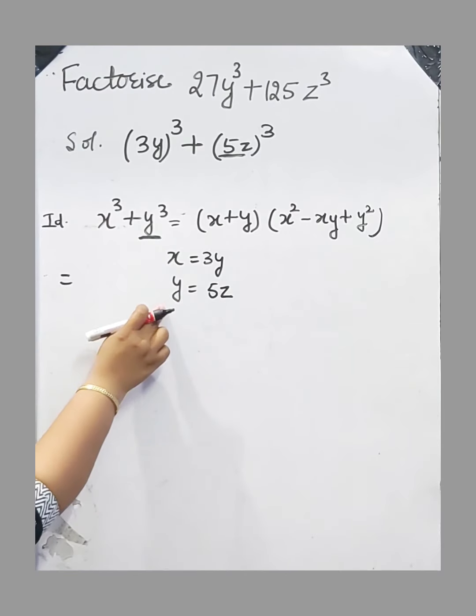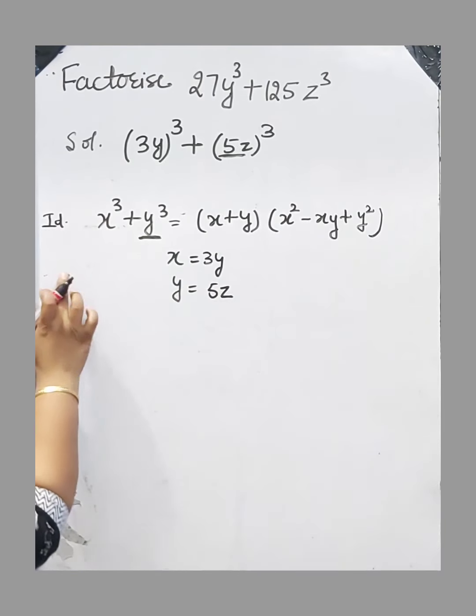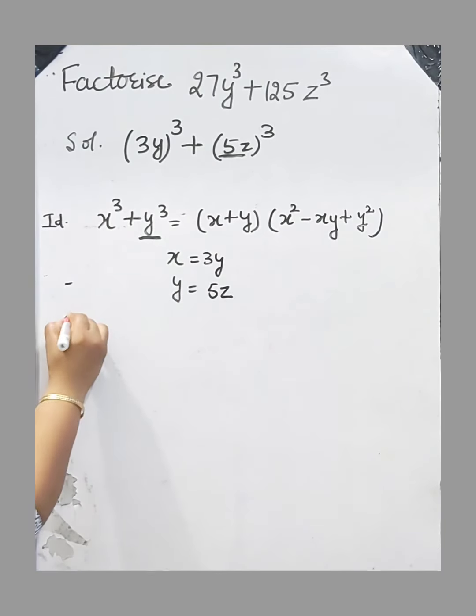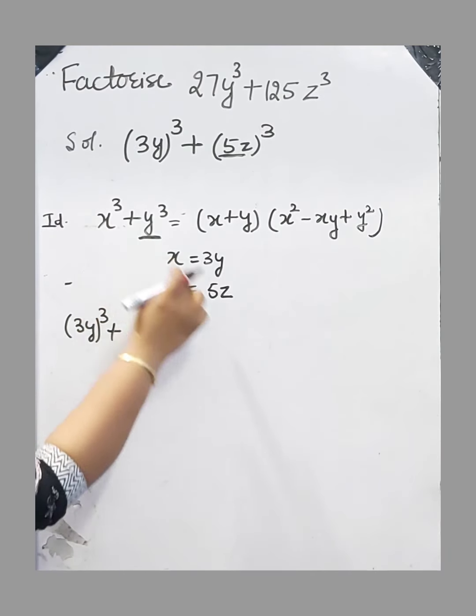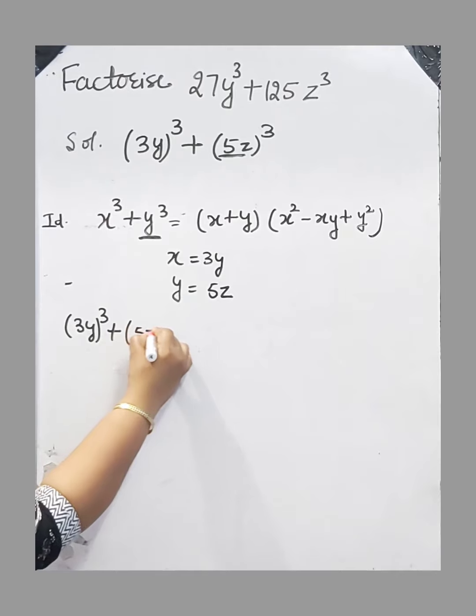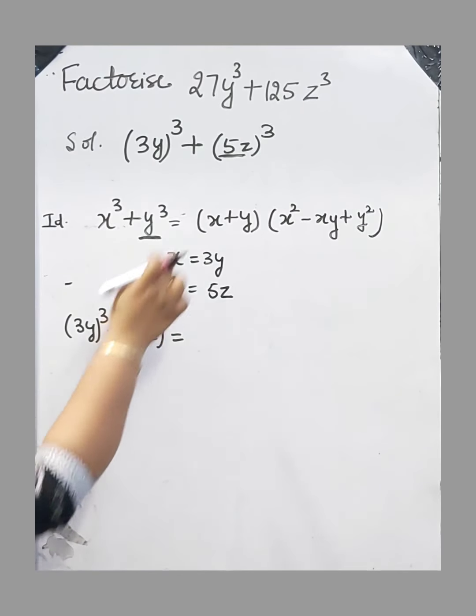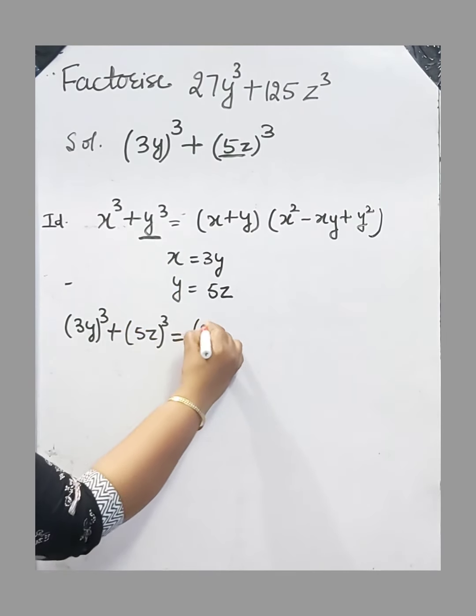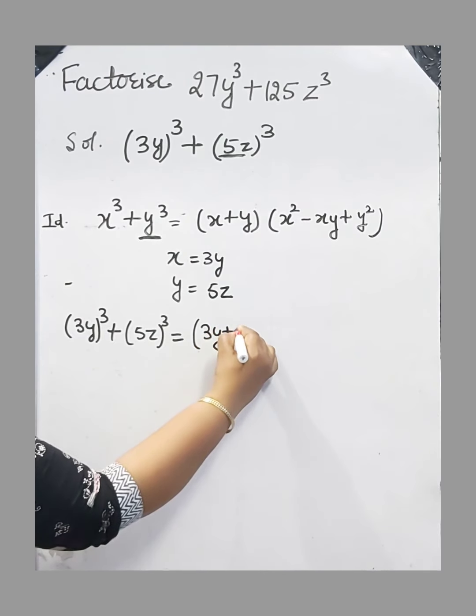Now we have to put the value of x and y in our identity. x³ means (3y)³, y³ means (5z)³. It is equal to (x + y), which means (3y + 5z).